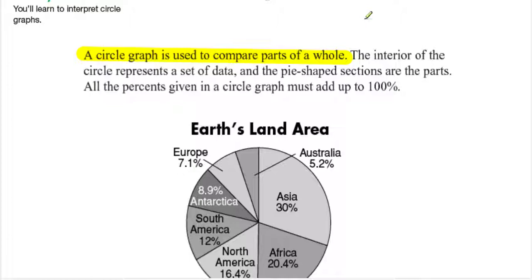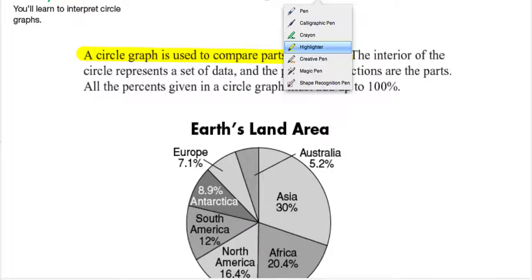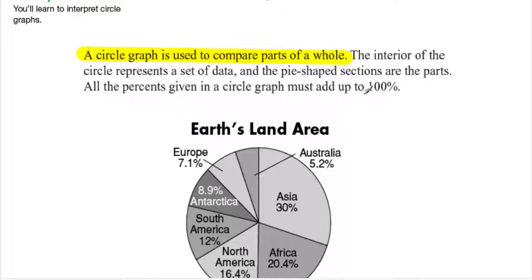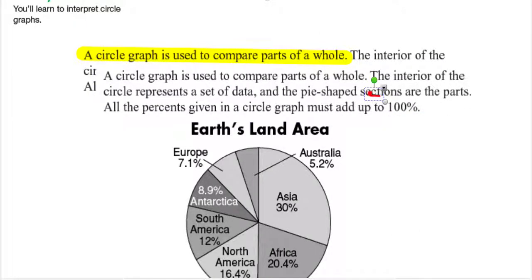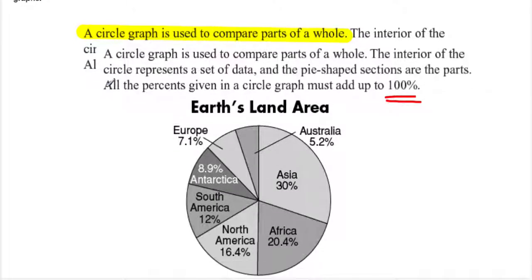The interior of a circle represents a set of data, and the pie-shaped sections are the parts. All the percents given in a circle graph must add up to 100%. So if you are going to create a circle graph, all the parts in the circle must add up to 100%. This becomes important.